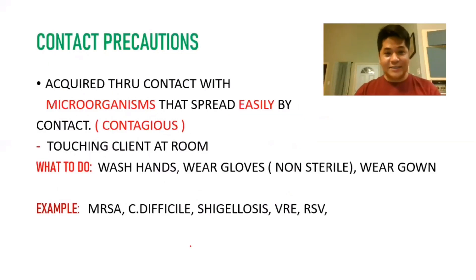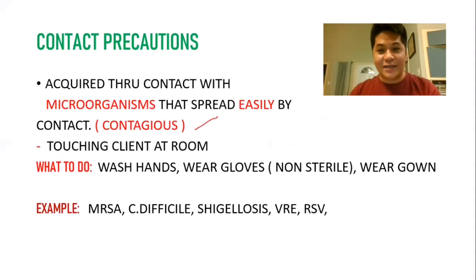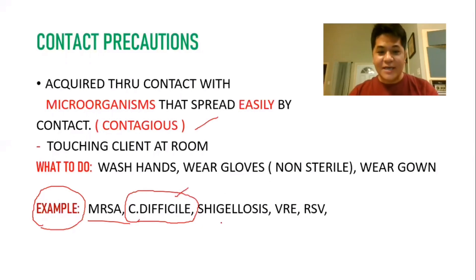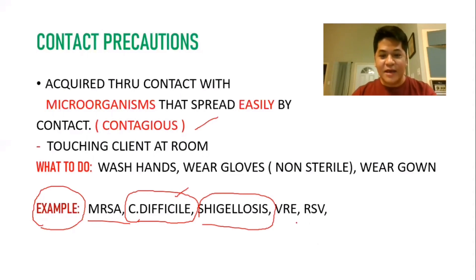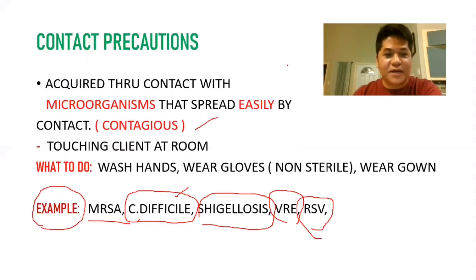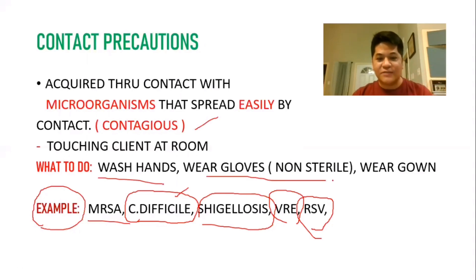Contact precautions apply to microorganisms that spread easily through contact — they are highly contagious. When you go into the client's room and touch them, you need to protect yourself. Examples of these diseases are MRSA (methicillin-resistant Staphylococcus aureus), C. difficile — a contagious form of diarrhea — Shigellosis, a gram-negative bacterial infection causing fever and diarrhea, VRE (vancomycin-resistant enterococci), and RSV (respiratory syncytial virus).